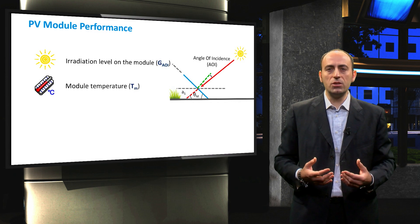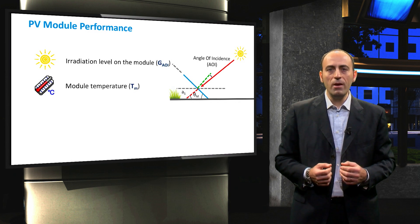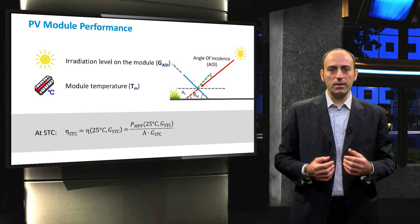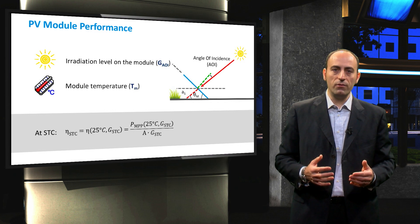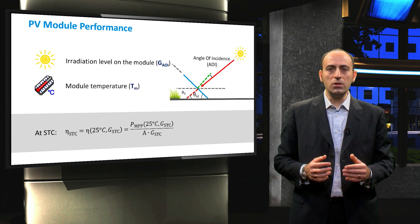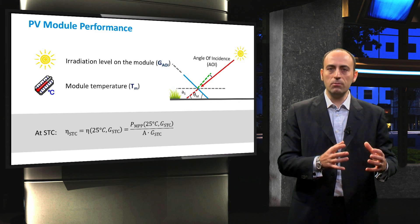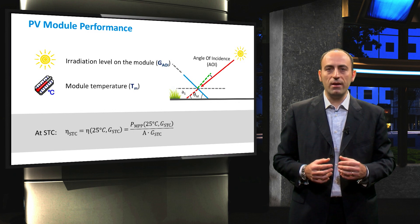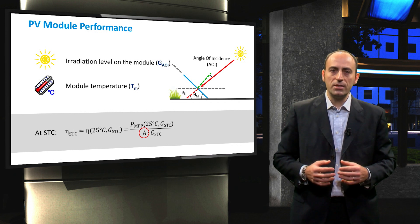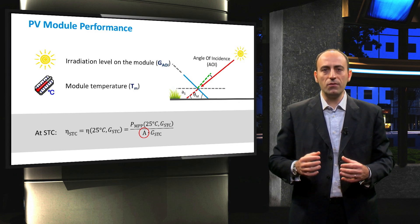You may remember that at standard test conditions, which is 1000 watts per square meter, 25 degrees Celsius and no wind, the efficiency of the PV module is computed as the ratio between the maximum power point divided by the STC irradiance and the area of the module. So, let's break down what is happening here for different irradiation and temperature levels.